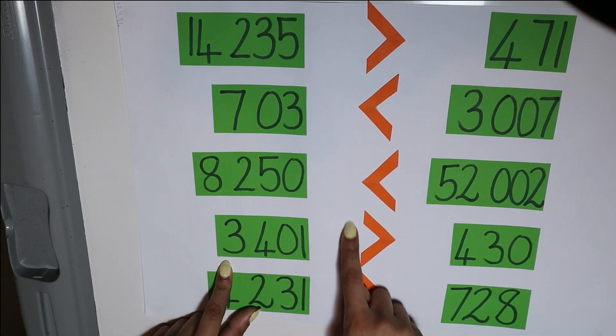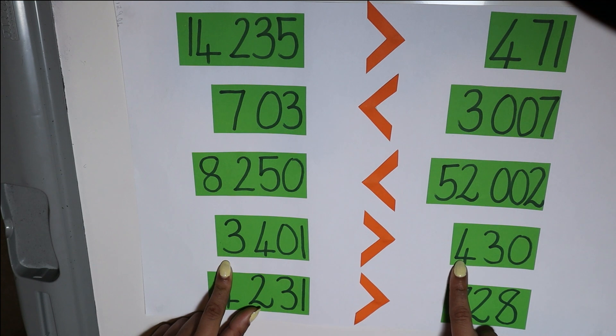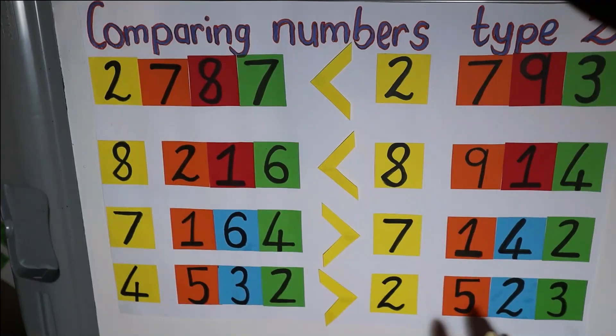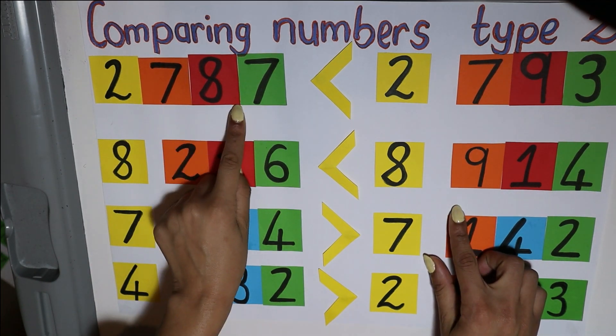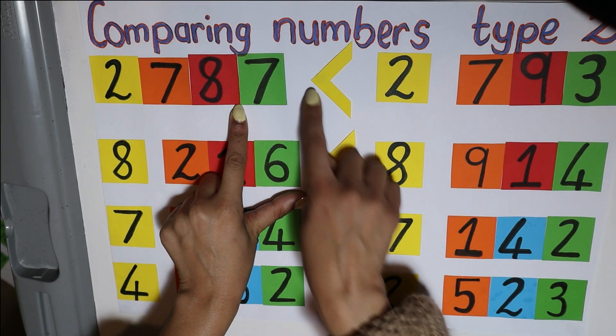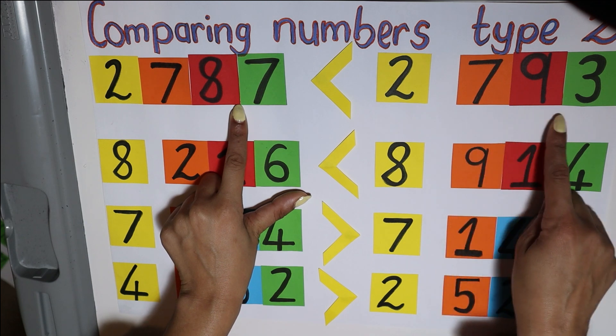3,401 is more than 430. If you look at this one, we will have 2,787 is less than 2,793.